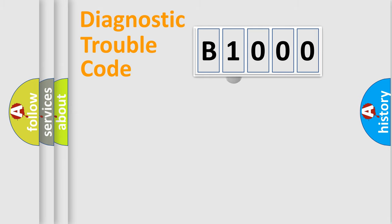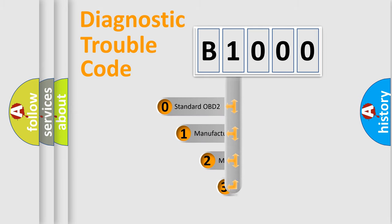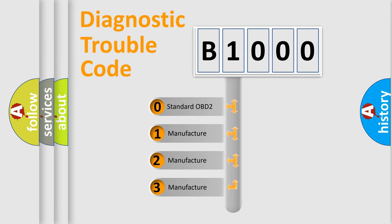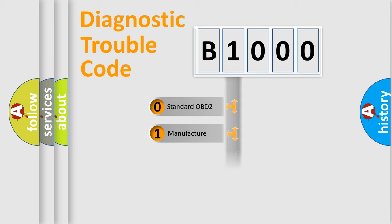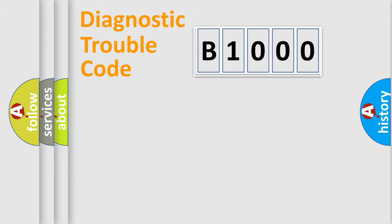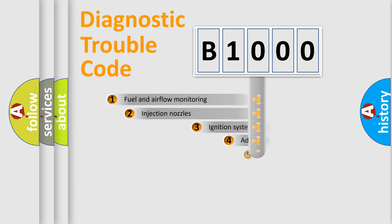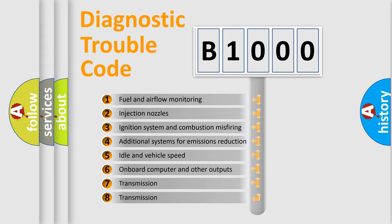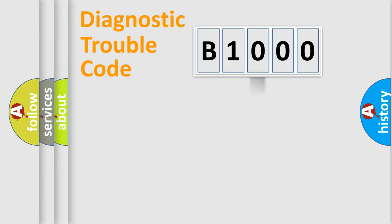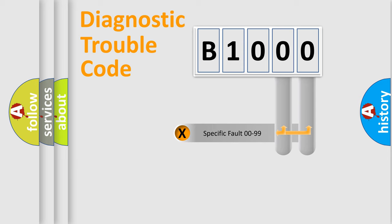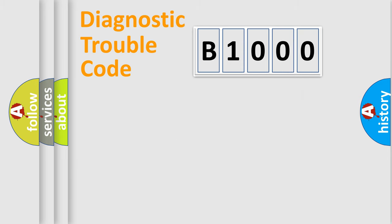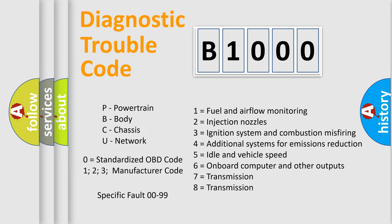This distribution is defined in the first character of the code. If the second character is expressed as zero, it is a standardized error. In the case of numbers 1, 2, or 3, it is a more specific manufacturer-defined error. The third character specifies a subset of errors. The distribution shown is valid only for the standardized DTC code. Only the last two characters define the specific fault of the group. Such a division is valid only if the second character code is expressed by zero.